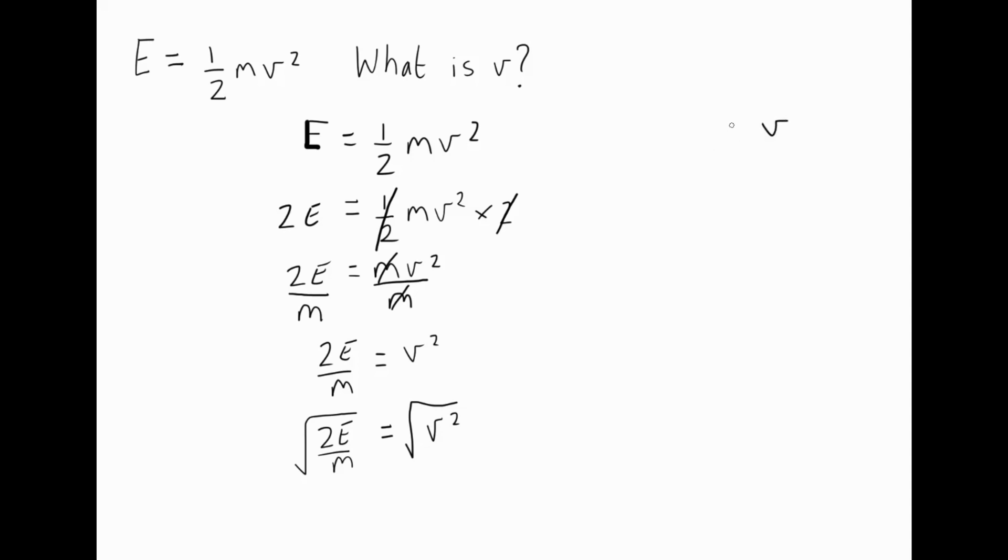I'll write that over here and over here we're left with the square root of 2E over M. And we would normally write it this way around, we would say that V equals the square root of 2 multiplied by E divided by M. So if you can solve this equation, if you can follow what I just did, then you can pretty much do anything in GCSE physics.